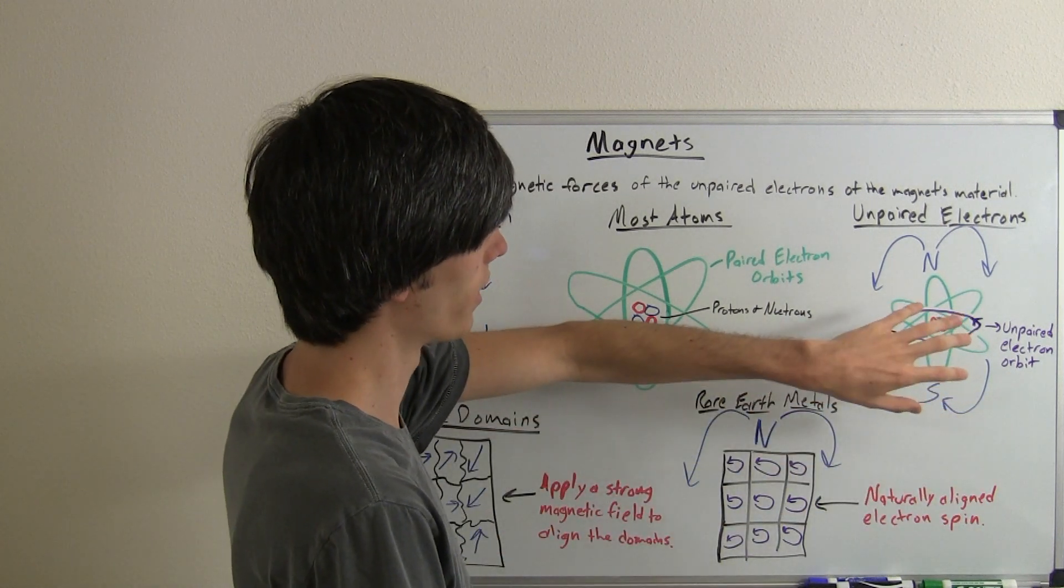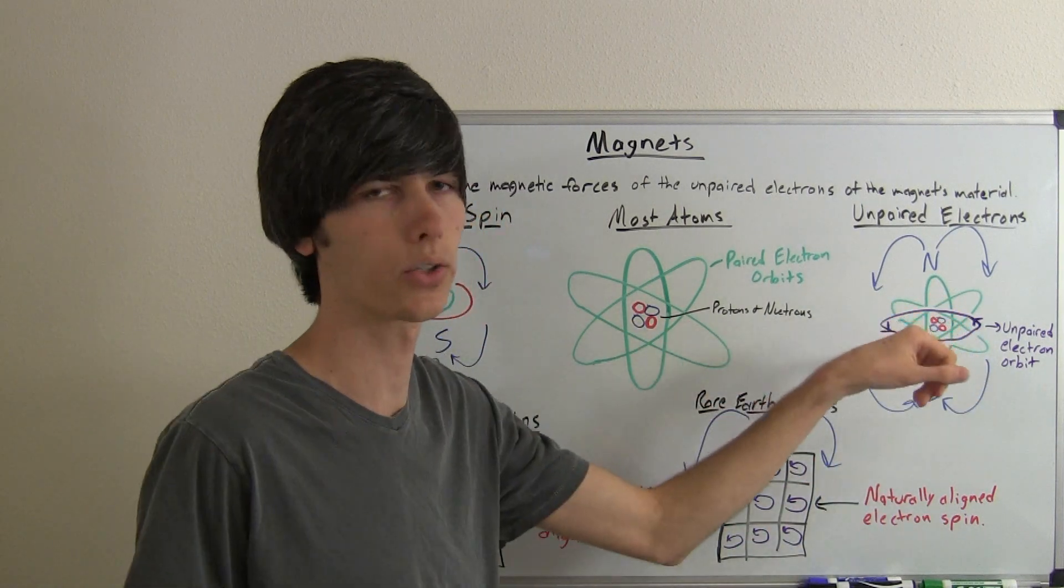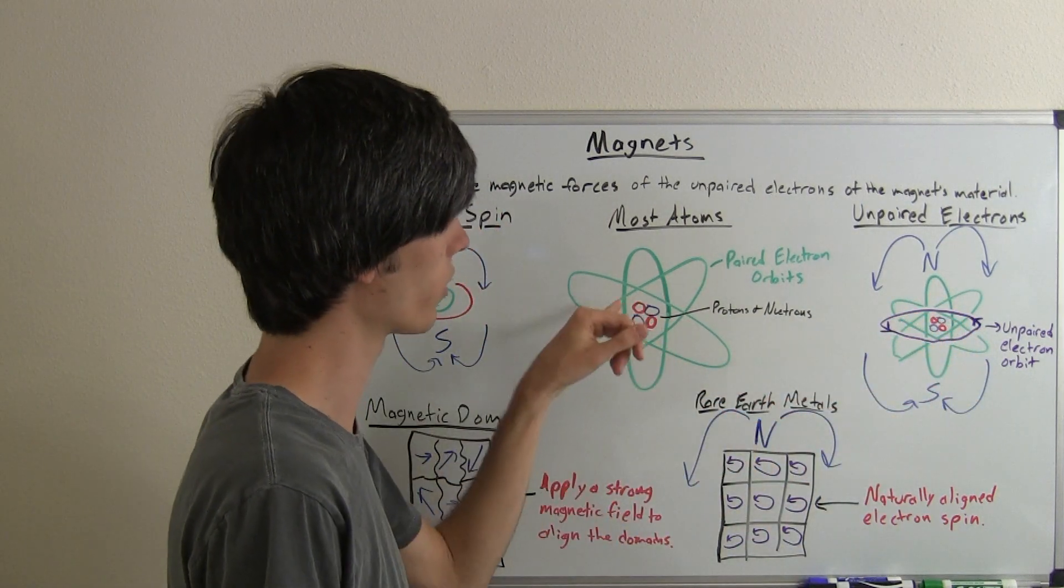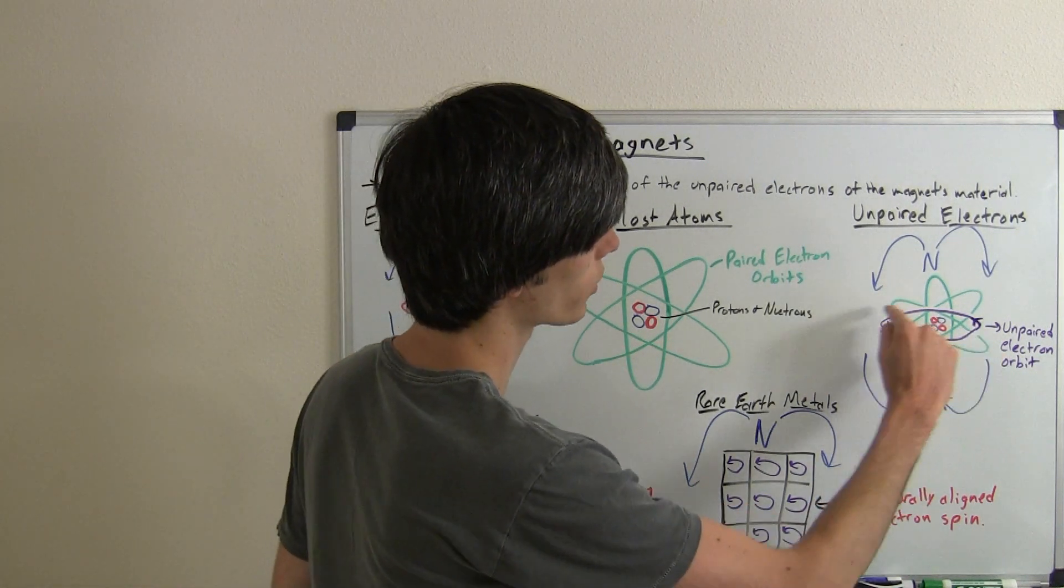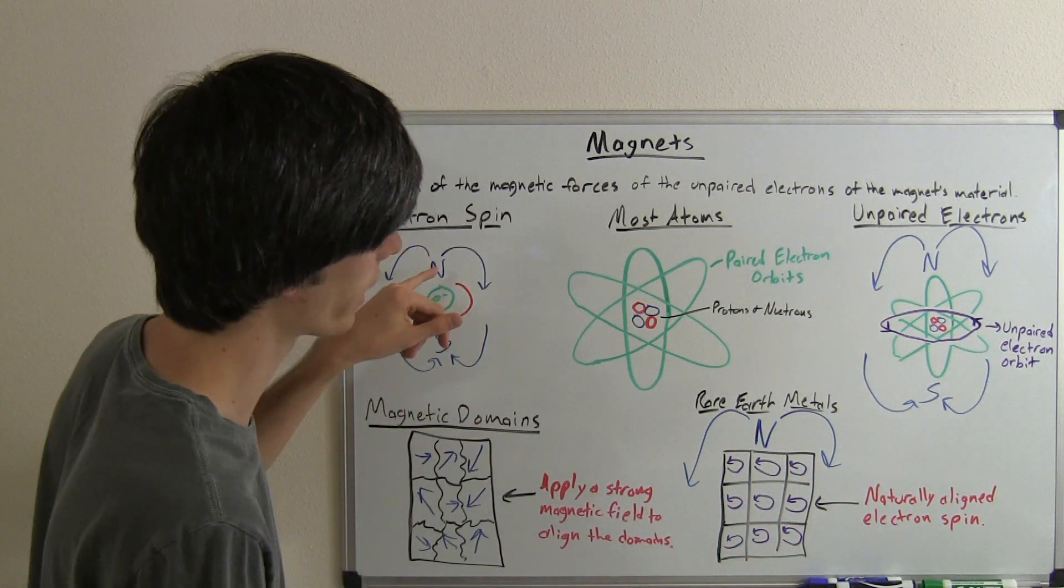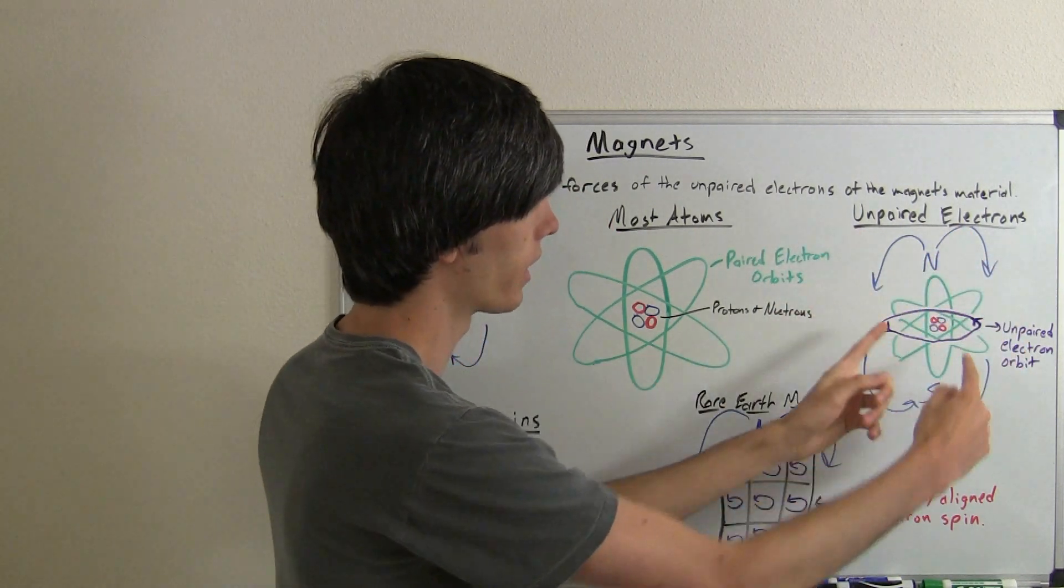Well that orbit, this atom is going to take on the properties of that one unpaired electron because all of the other paired electrons cancel themselves out. So because that one electron produces this magnetic field, this atom as a whole takes on that magnetic field.